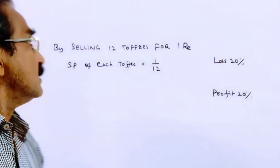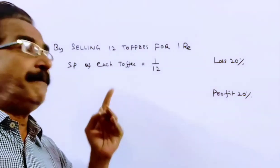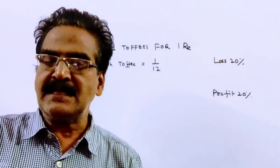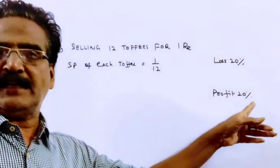Friends, the problem is given in the description box. By selling 12 toffees per rupee, a man loses 20%. Here the question is, how many for a rupee should he sell to make a profit of 20%?